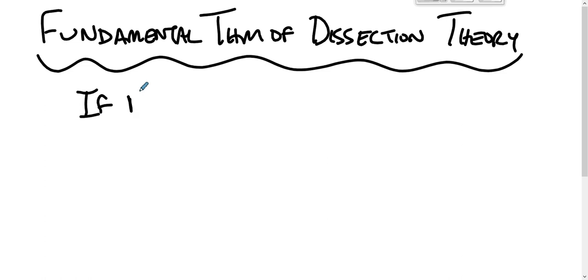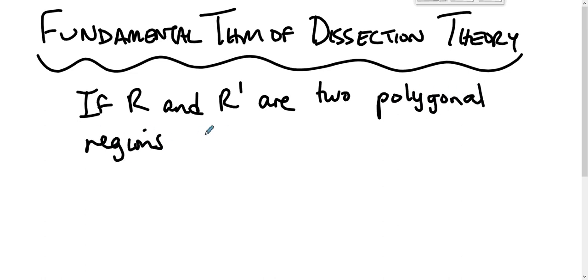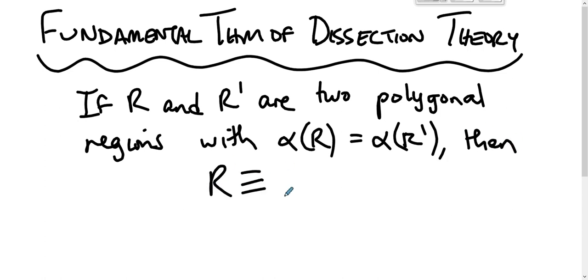If R and R prime are two polygonal regions with the area of R equal to the area of R prime, then R is scissors congruent to R prime.